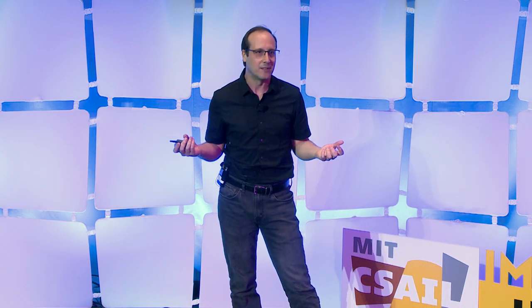So how do you proceed if you don't want to use virtual environments either — no data, no virtual environments? What if we just don't train the network at all? Just put random weights: all the connections between neurons are just random numbers, no training whatsoever. It will still compute something, and we can use that as a representation.